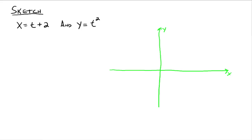An example of some parametric equations would look like the following. We want to sketch the graph of these parametric equations where x equals t plus 2 and y equals t squared. Notice that x is a function of t and y is some function of t — that's all that f of t and g of t thing was talking about in the definition.